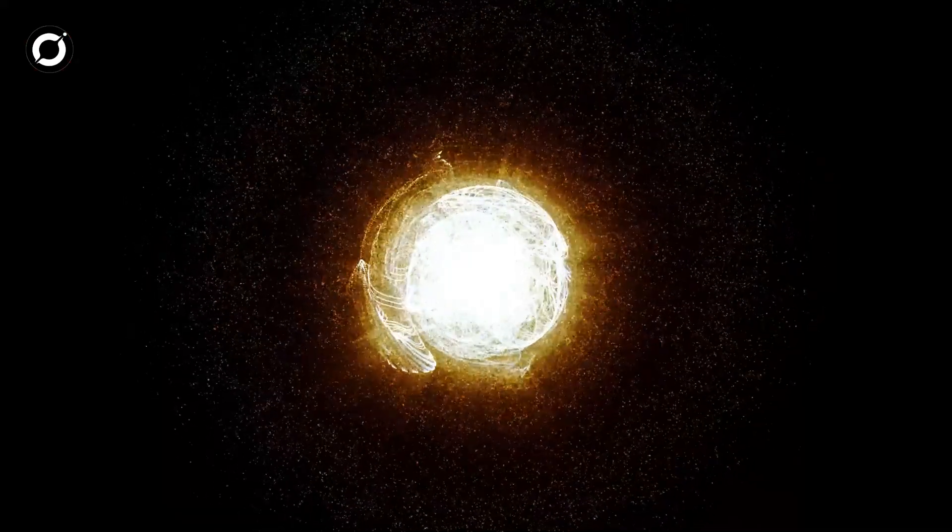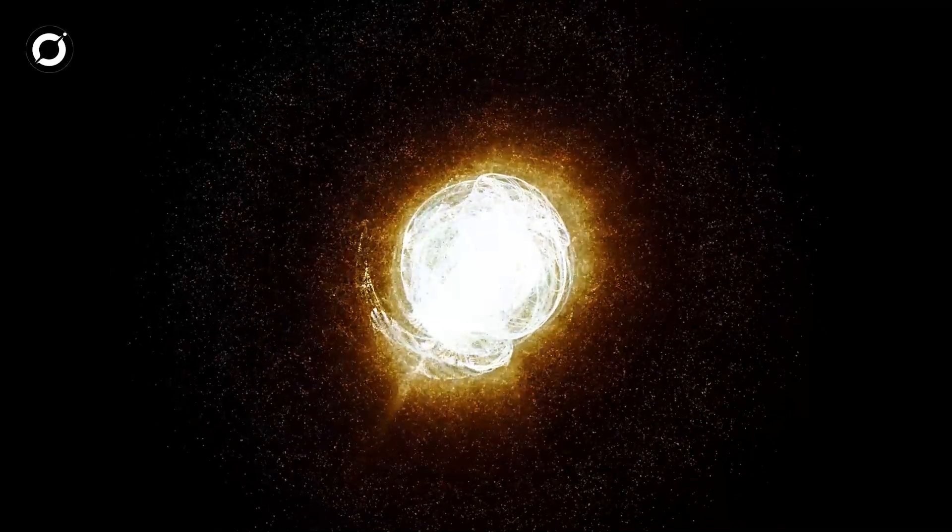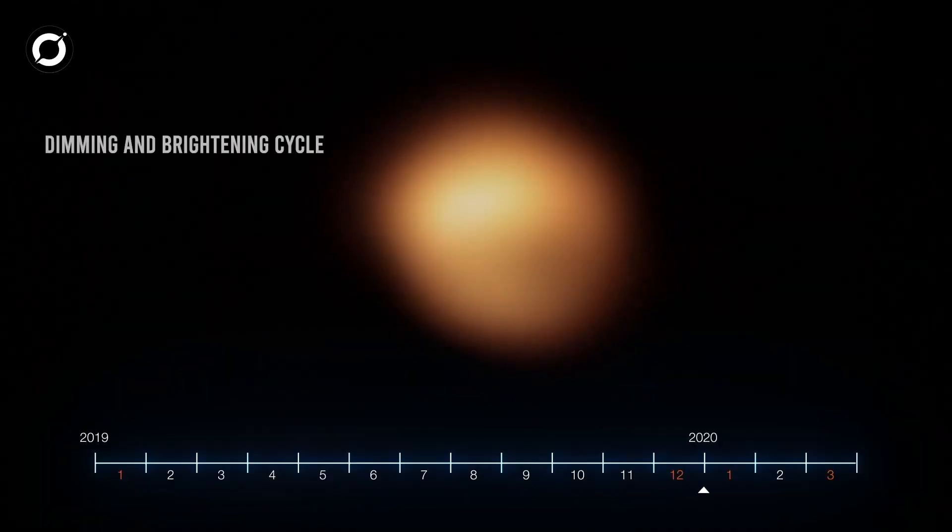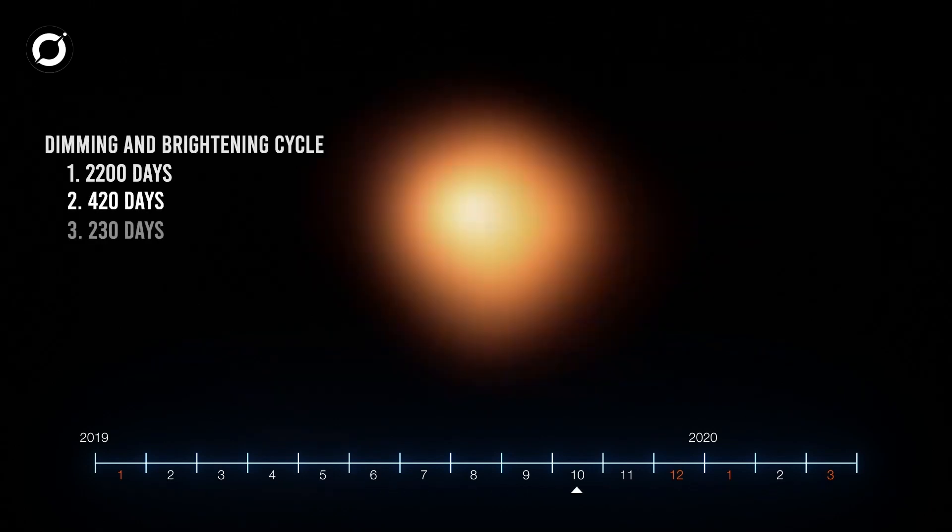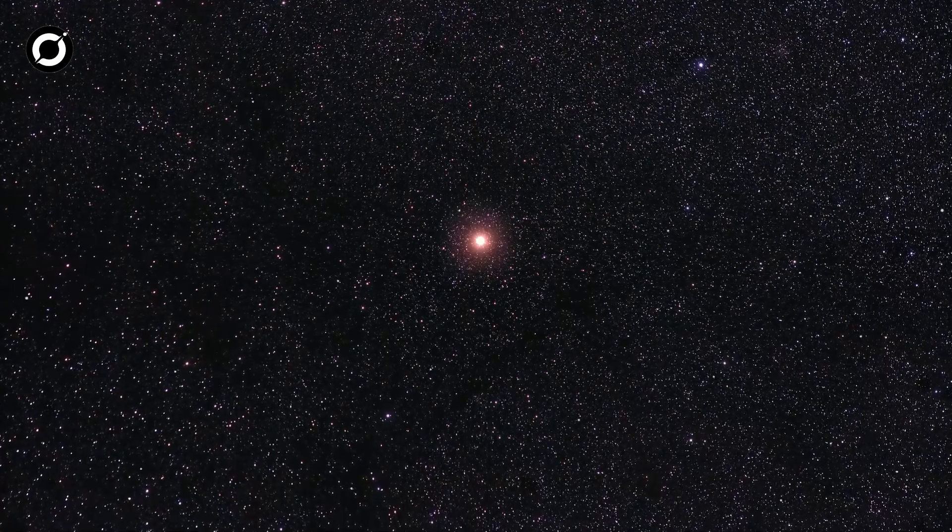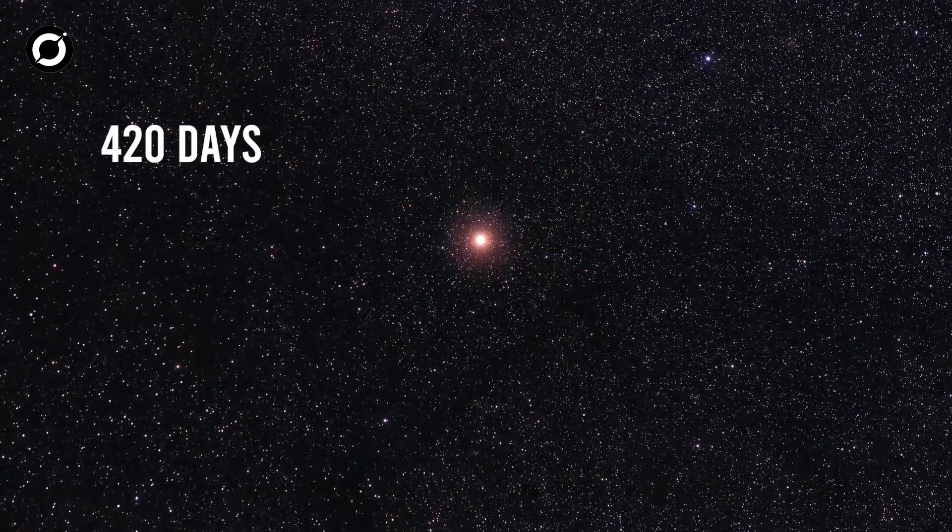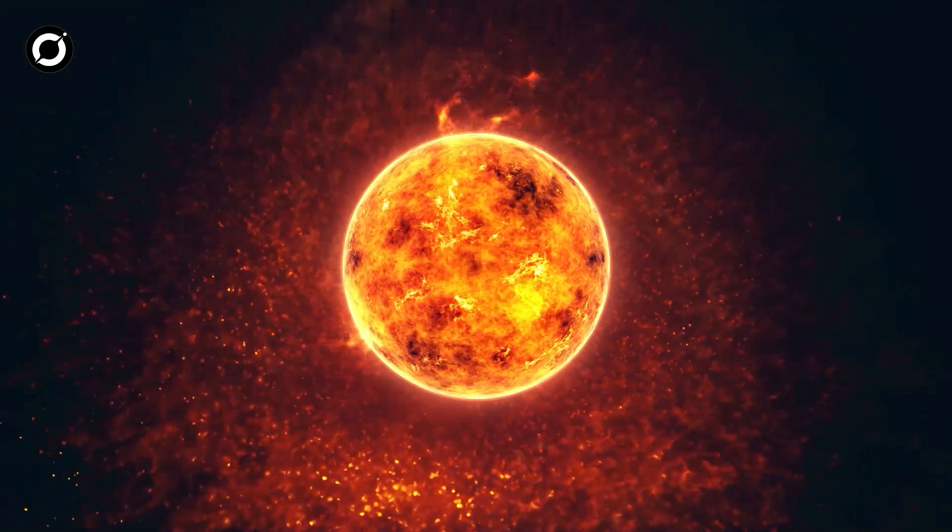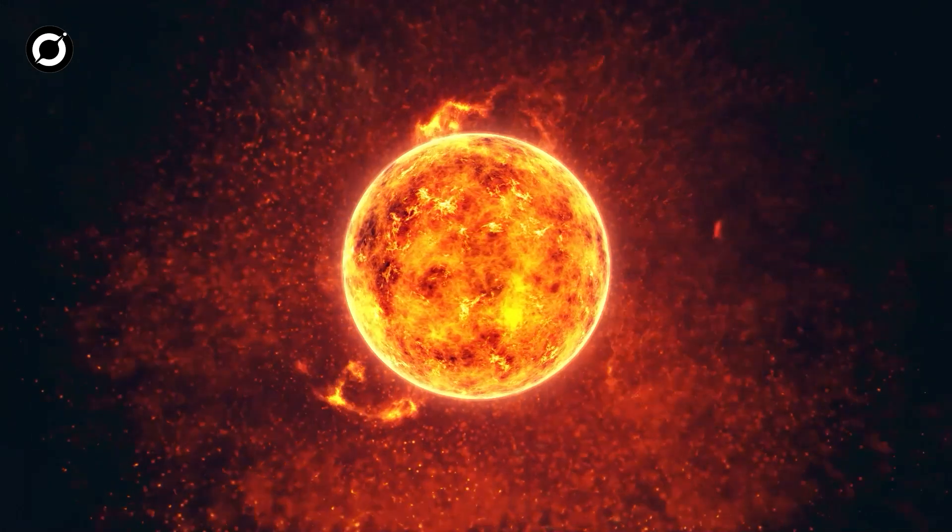You see, Betelgeuse is unstable, breathing in and out regularly, with overlapping overtones. Following its brightness over the past century, astronomers have noted changes over periods of 2,200 days, 420 days, 230 days, and 185 days. Usually, astronomers treat the 420 day up and down as the primary in and out pulsation, with the shorter cycles as overtones. The 2,200 day or 6-year period isn't generally considered part of these ins and outs, and is instead dubbed a long secondary period, a feature of unknown origin common to one-third of supergiant stars.